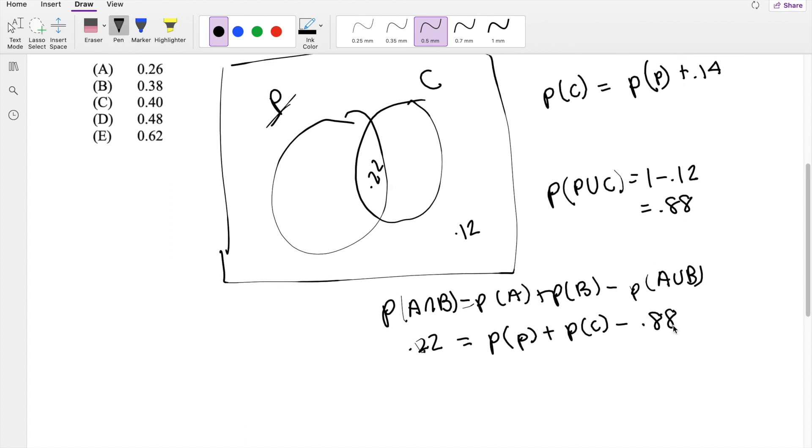Okay, solving this, we can just plug in probability of chiropractor directly in here. So we get 0.22 is equal to probability of P plus probability of P plus 0.14 minus 0.88.